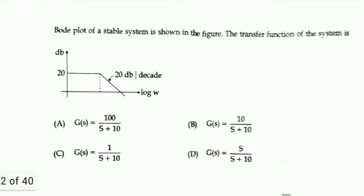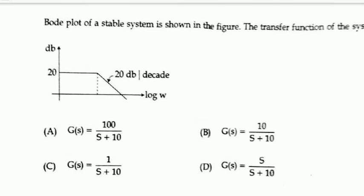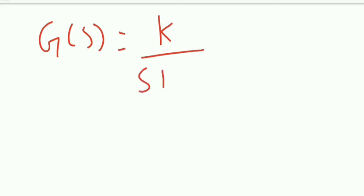Next question: the Bode plot of a stable system is shown. The DC gain is 20 dB and there is a slope of −20 dB/decade, indicating one pole. Assume the transfer function is G(s) = k/(s + a). Substituting s = jω and ω = 0 gives the DC gain: G(0) = k/a = 20 dB.